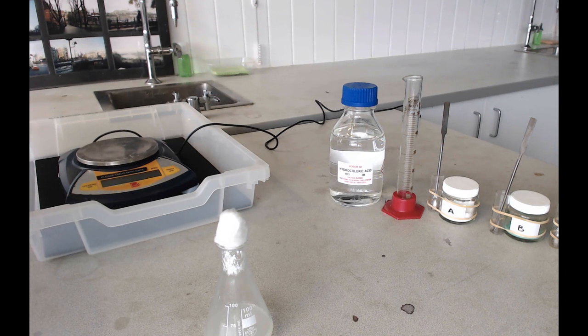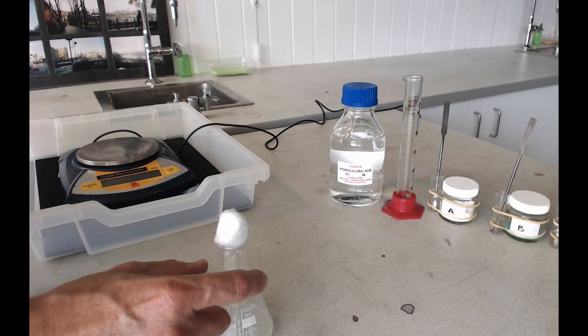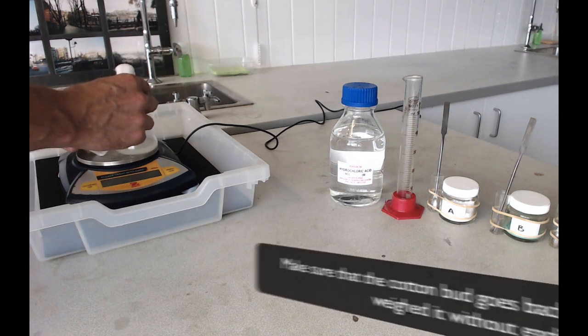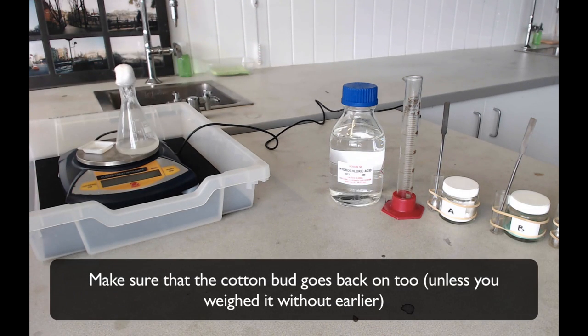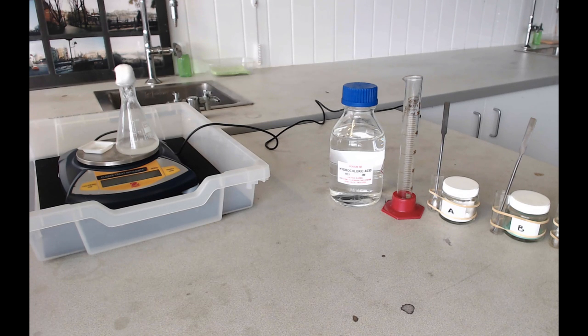Once all your solid is finished reacting, so you can't see any of it left, you just need to put everything back on the balance, so that includes the weighing boat. You can now see how much weight it lost, and that weight that it lost will be down to the carbon dioxide that it gave off.